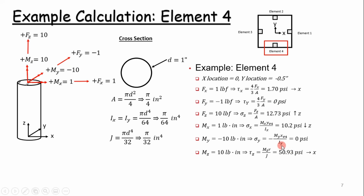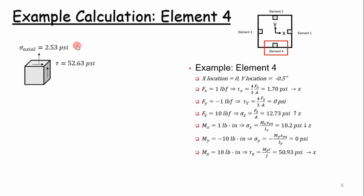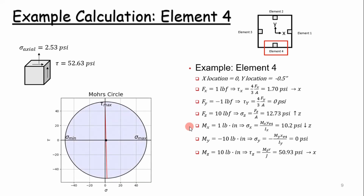We can add the stresses together on a stress element as shown here. This is stress element four, where we have an axial load of 2.53 PSI and a shear stress load of 52.63 PSI. Once we determine that, we can construct Mohr's circle. We've programmed it, and this is our Mohr's circle for this loading case. Then we can compare it to our allowables. That's how we're going to approach this problem in our programming example in the next video. Hope you enjoyed it — see you next time.